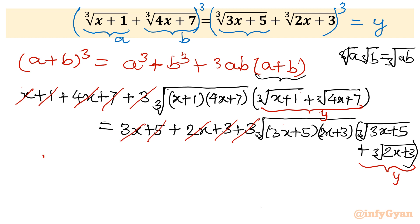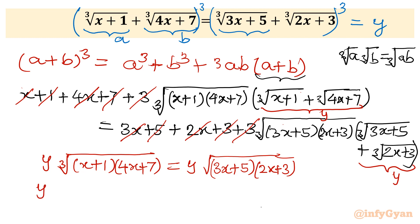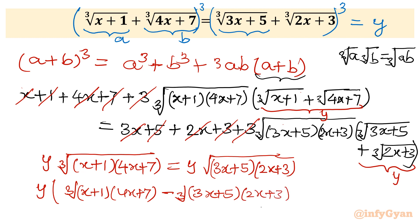After cancellation we have: y times cube root of (x+1)(4x+7) equals y times cube root of (3x+5)(2x+3). Taking all terms to the left and factoring out y: y times [cube root of (x+1)(4x+7) minus cube root of (3x+5)(2x+3)] = 0.